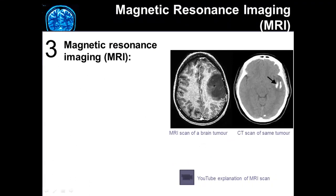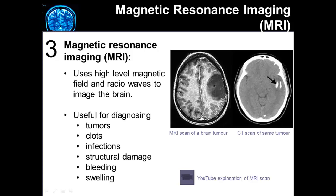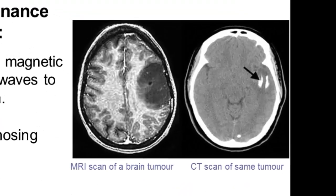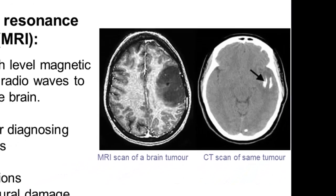The third way science can look at the brain is through magnetic resonance imaging, or MRI. Instead of x-rays, the MRI uses high-level magnetic fields and radio waves to image the brain. MRIs are extremely useful in identifying tumors, blood clots in the brain, infections, any structural damage, active bleeding, or swelling within the brain. You can see by this picture that the MRI scan gives a much better picture of the brain tissue and tumor compared to the CT scan.